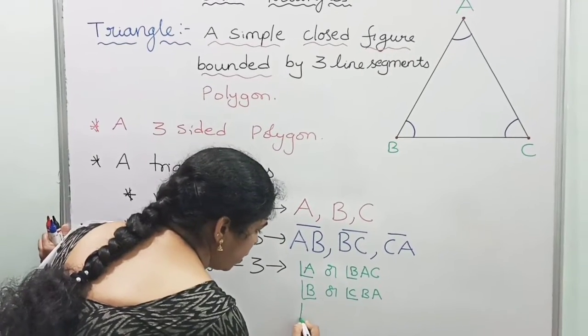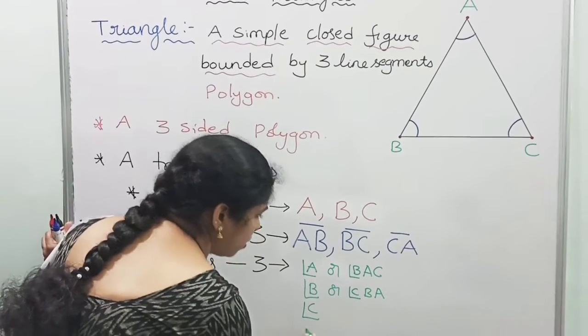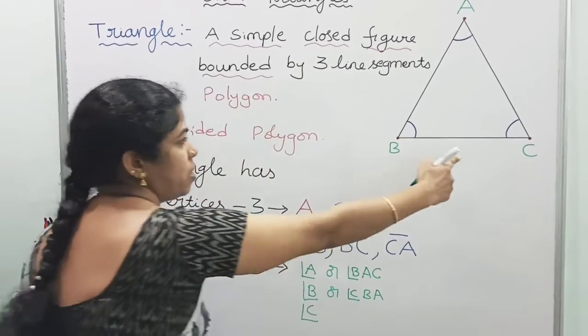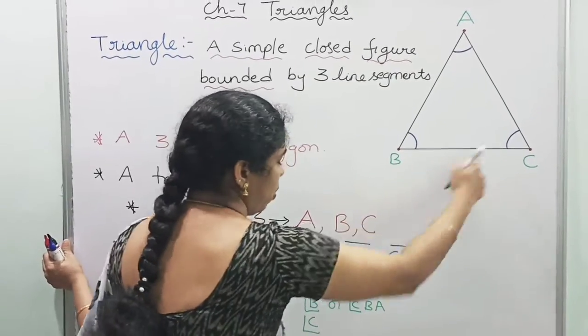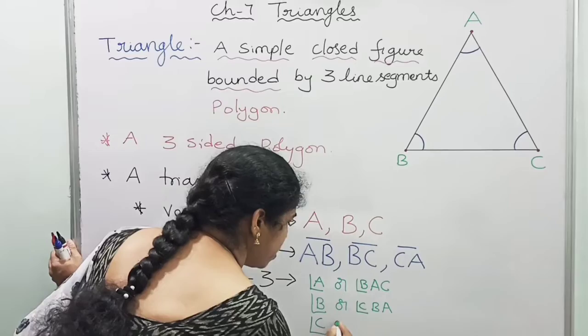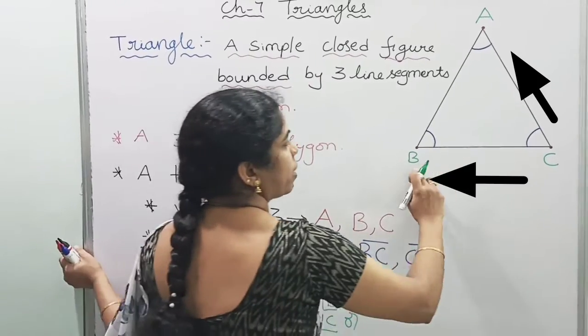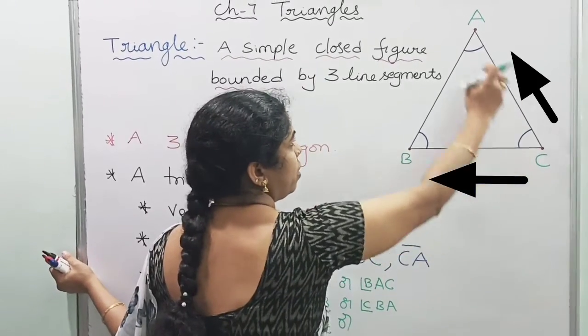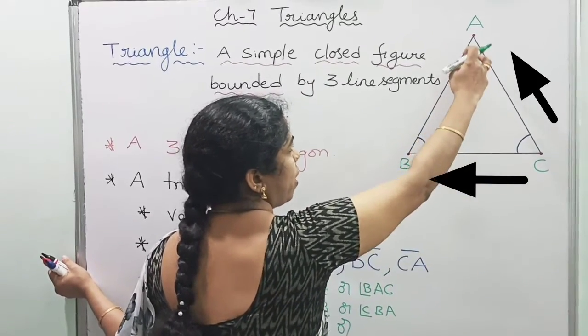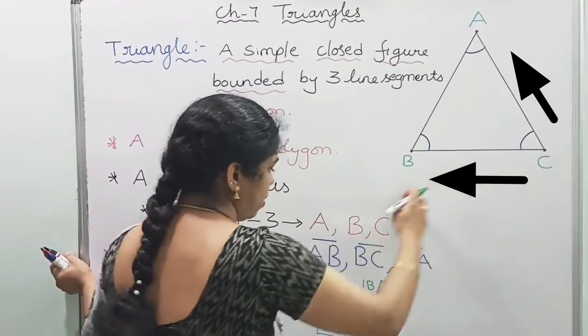Angle C can be written as angle BCA or angle ACB.